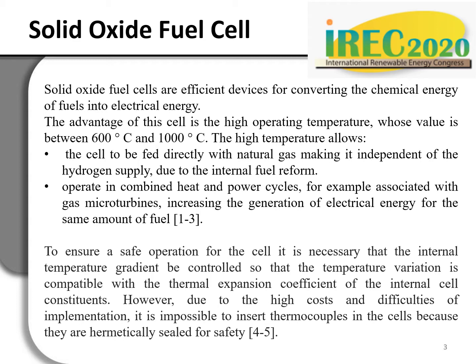Solid oxide fuel cells are efficient devices for converting the chemical energy of fuels into electrical energy. The advantage of this cell is the high operating temperature, whose value is between 600 and 1000 degrees Celsius. The high temperature allows the cell to be fed directly with natural gas, making it independent of the hydrogen supply due to internal fuel reforming, and to operate in combined heat and power cycles — for example, associated with gas microturbines — increasing the generation of electrical energy for the same amount of fuel.